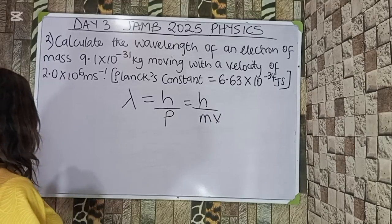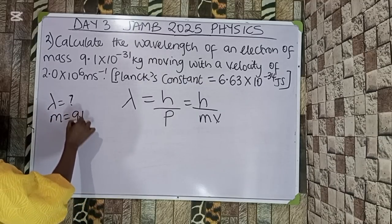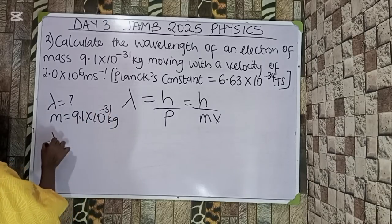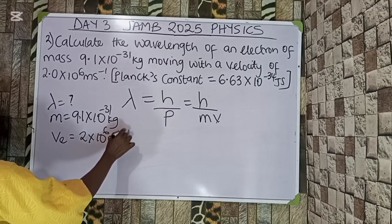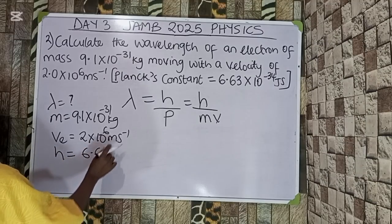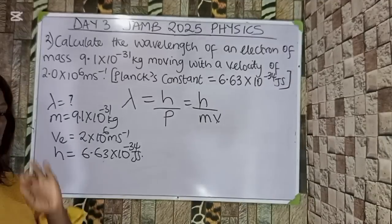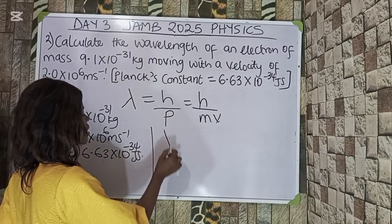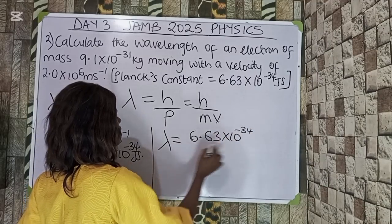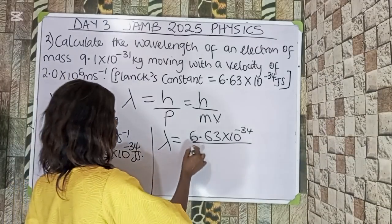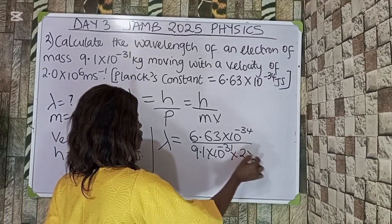Let us state the parameters: lambda is what we are looking for, mass m = 9.1×10⁻³¹ kg, velocity v = 2×10⁶ m/s, and Planck's constant h = 6.63×10⁻³⁴ J·s. Substituting into the formula, lambda equals 6.63×10⁻³⁴ divided by 9.1×10⁻³¹ multiplied by 2×10⁶.